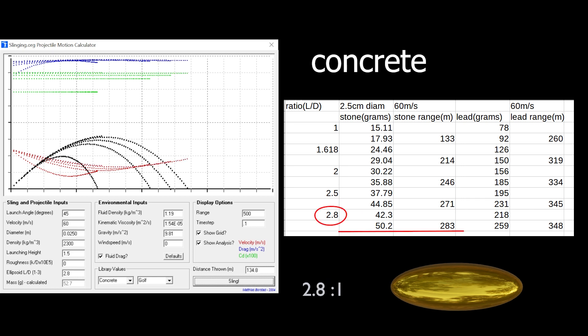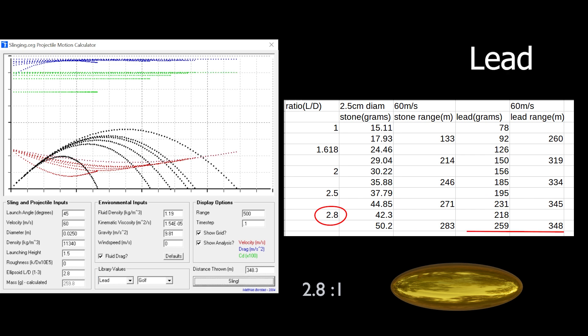First, we can see the difference in range of projectiles while changing the length and keeping the diameter the same. This changes the mass and ratio at the same time.